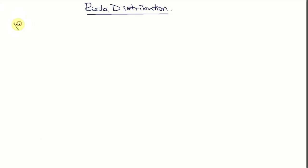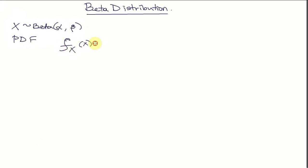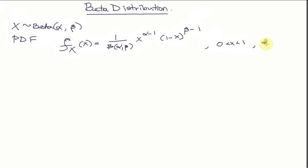If x is a random variable which is beta distributed with parameters alpha and beta, the probability density function is given by f of x equal to 1 divided by beta of alpha, beta — that's a beta function — times x to the power of alpha minus 1, times 1 minus x to the power of beta minus 1. The support of this random variable is from 0 to 1, which is slightly different from what we have seen in the past, and alpha and beta both need to be greater than 0.